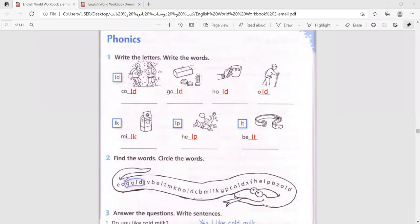Now let's circle the words in the snake: gold, belt, hold, milk,